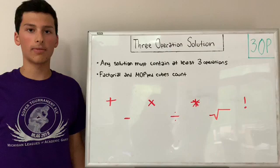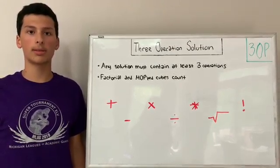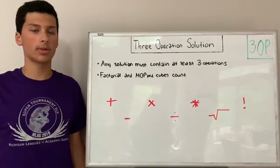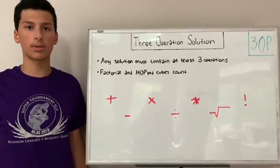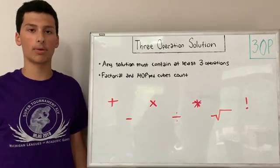Additionally, many new players make the mistake of just making a normal solution like 3 times 2 when a three-operation solution is called. They forget about it, and they mess up that way. They only have one operation.